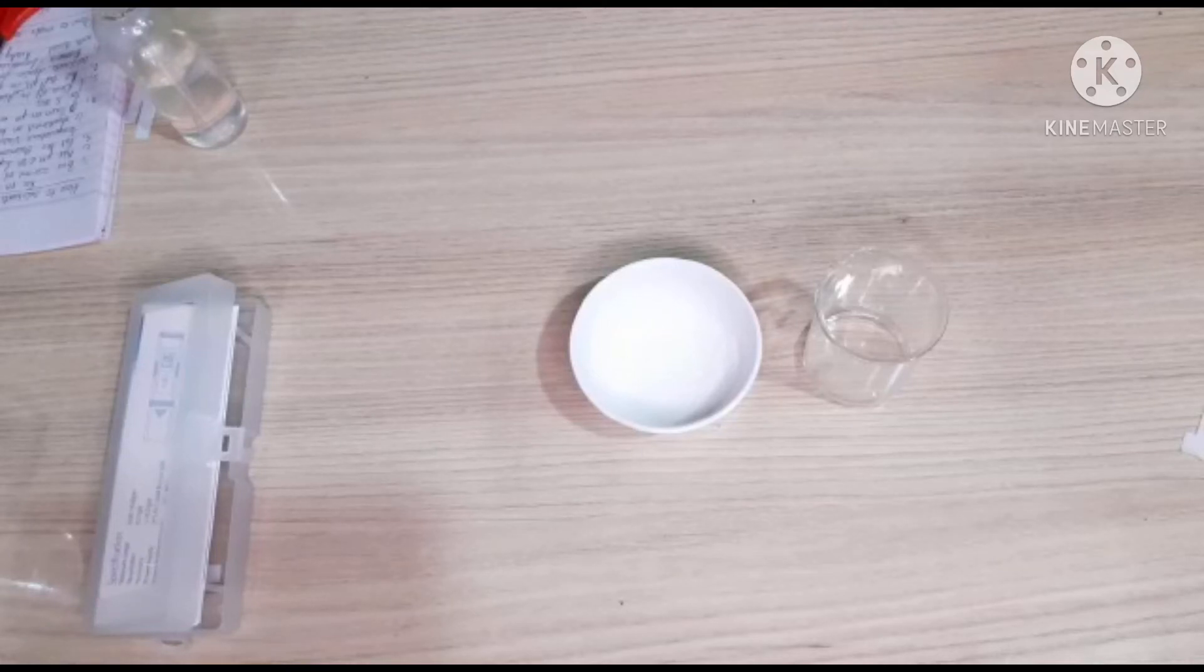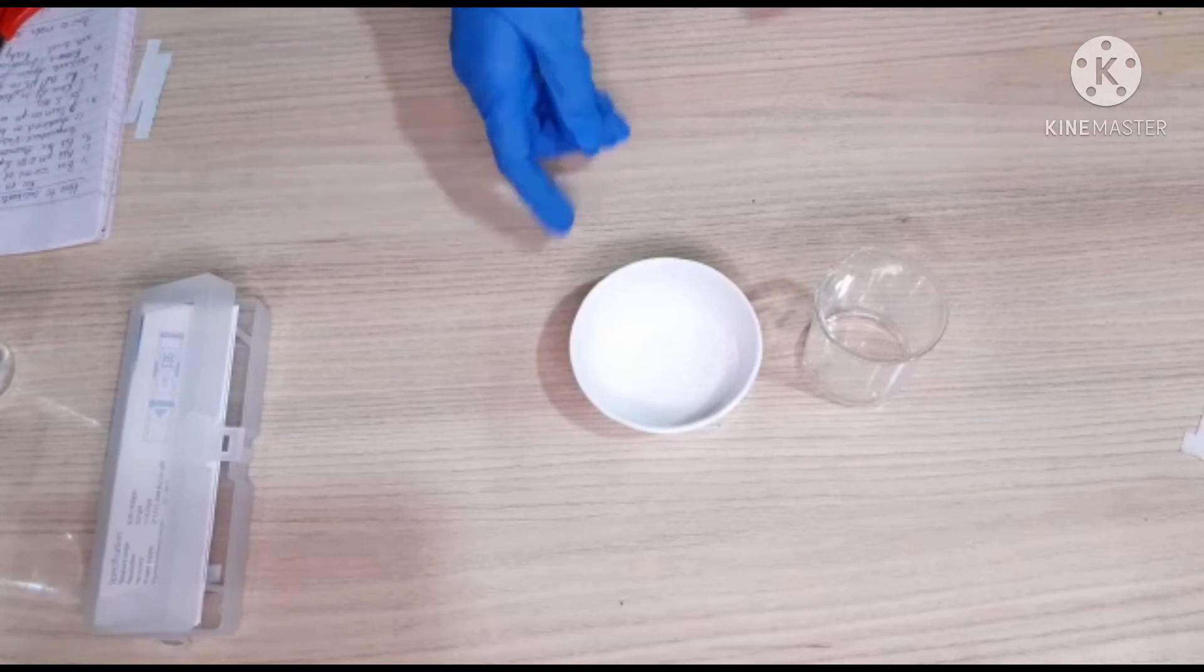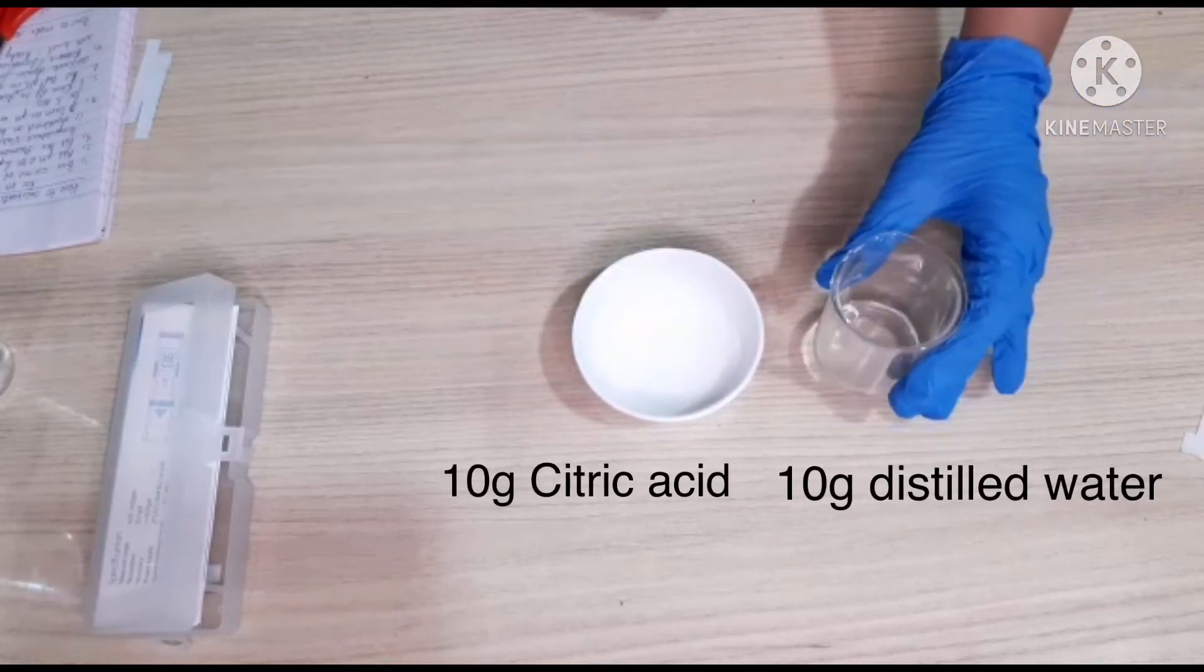Hi guys, today we will be making a 50% citric acid solution. So to make this, we will need 10 grams of citric acid and 10 grams of water.